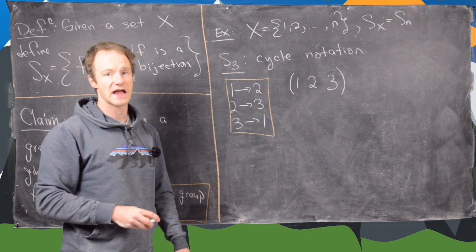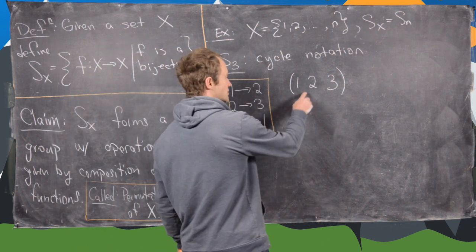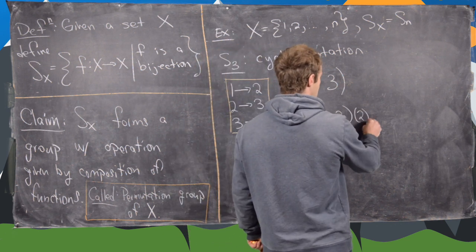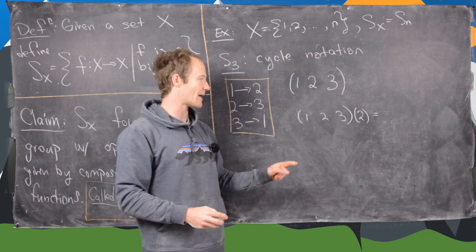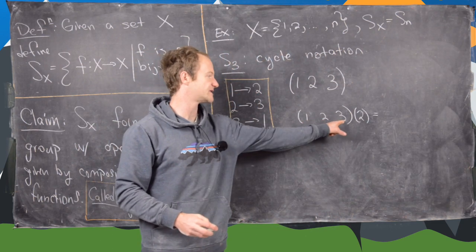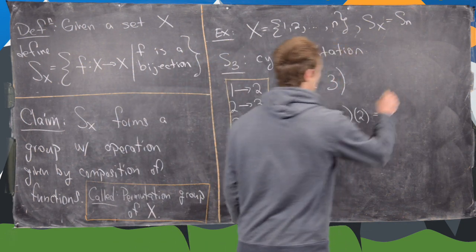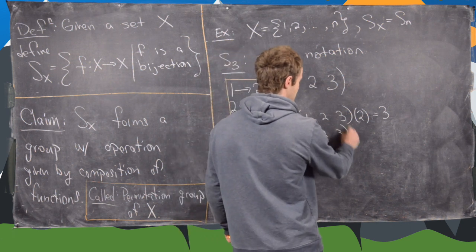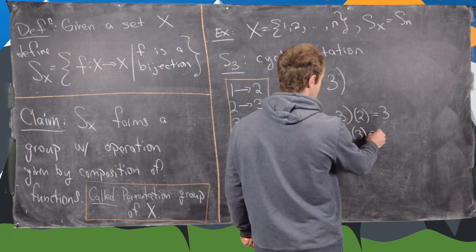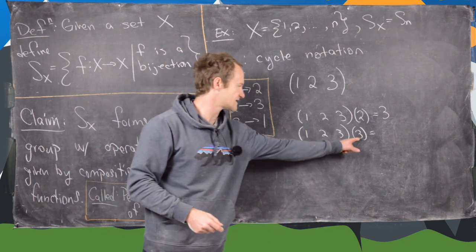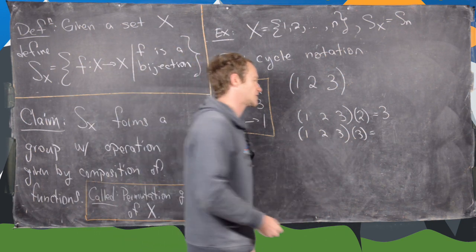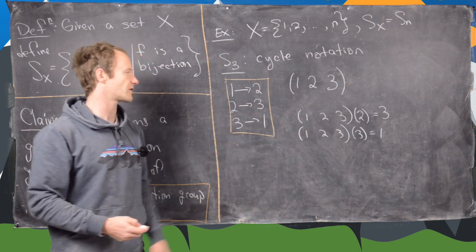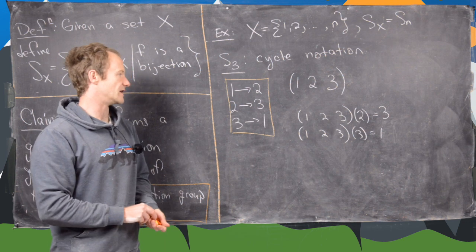You still think of this as a function. If you apply the cycle (1 2 3) to the number 2, you ask what happens to 2 — it's sent to 3, so the output is 3. If you apply it to 3, three loops back to 1, so it gets sent to 1. This cycle contains all the information from the original function. To find the inverse, we reverse the arrows: 1 goes to 3, 2 goes to 1, 3 goes to 2, giving the cycle (1 3 2). You can also get the inverse by reading the original cycle from right to left.